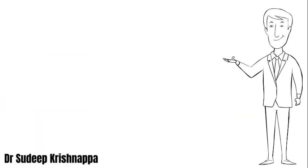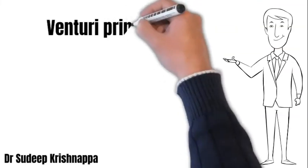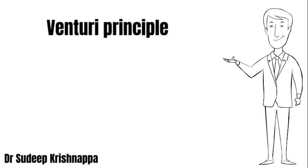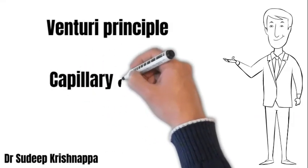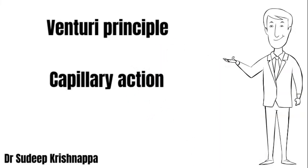As mentioned earlier, these nebulizers come in various shapes. For the purpose of explanation we have chosen two of them, but they do come in several different shapes. The essential working principle is the same: the Venturi principle generates a pressure drop and subatmospheric pressure; capillary action suctions the fluid present in the chamber towards the orifice; and the jet shatters the liquid film into aerosol particles against an internal baffle. Hope this was useful — thank you.